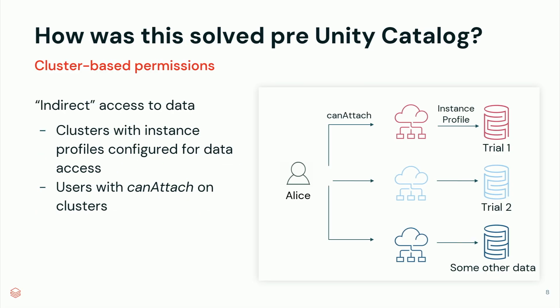So how was that solved pre-Unity Catalog? For those who were around before Unity Catalog, we had what we would call cluster-based permissions. How would Alice access data? It was configured through a cluster. You could have a cluster with an instance profile that wraps an IAM role or a service principal, and that role was configured to access certain data. For another cluster, you could configure an instance profile to access other data — trial two. Alice would gain indirect access to that data through 'can attach' on a cluster. She would attach a notebook to cluster one and get trial one, or cluster two for trial two. Very clean isolation, but the access was indirect.